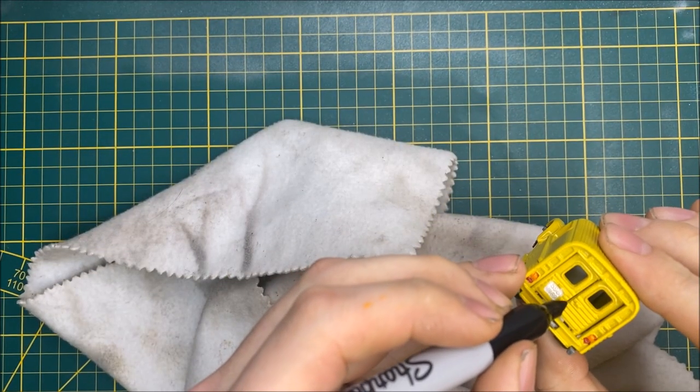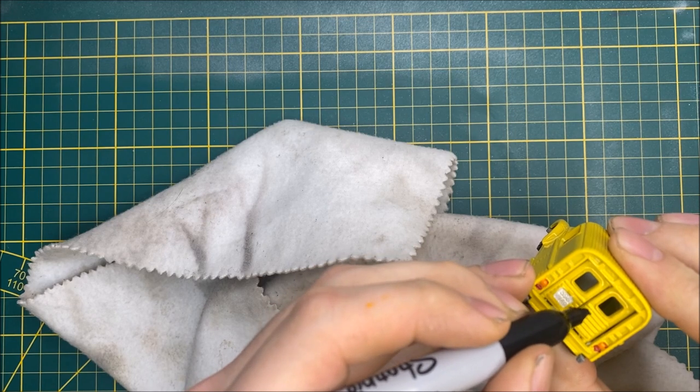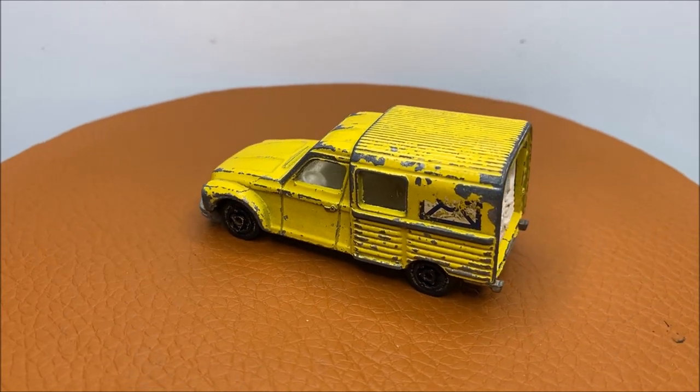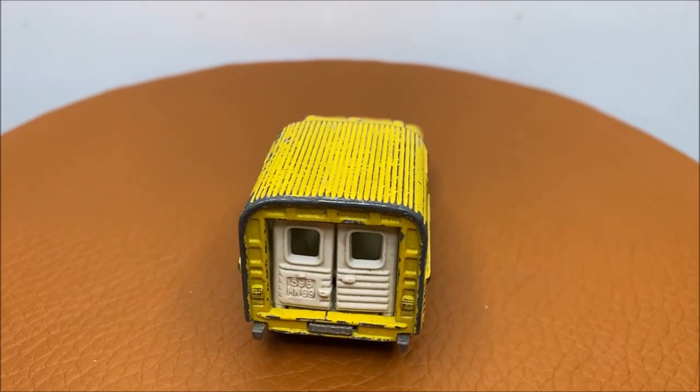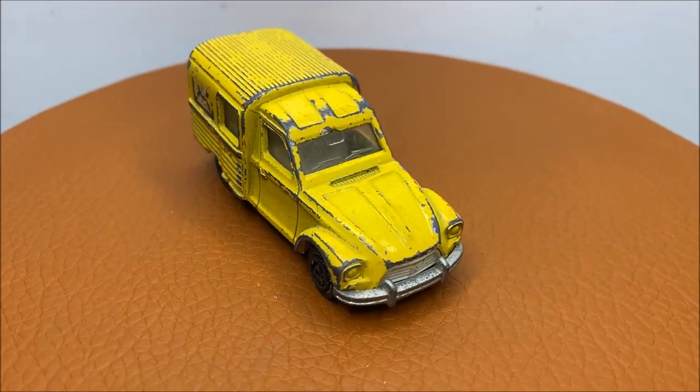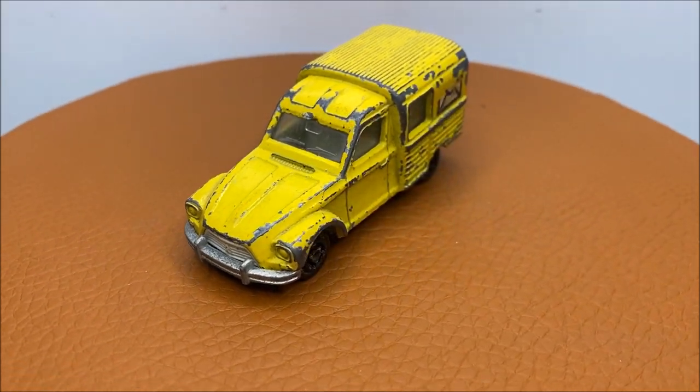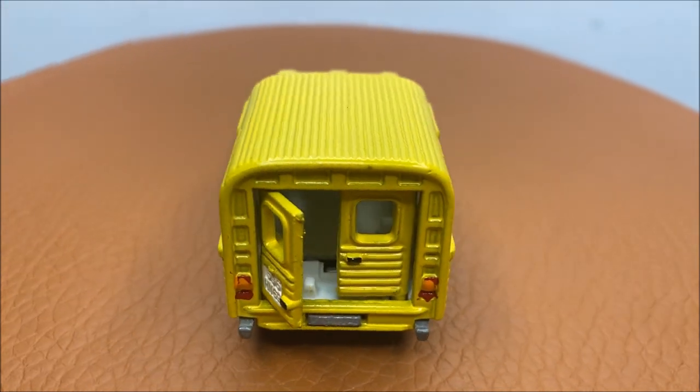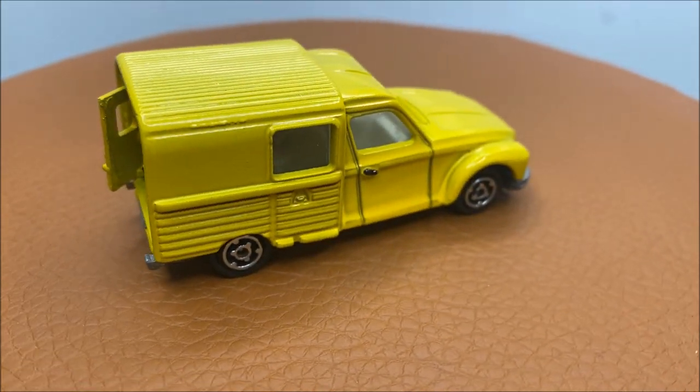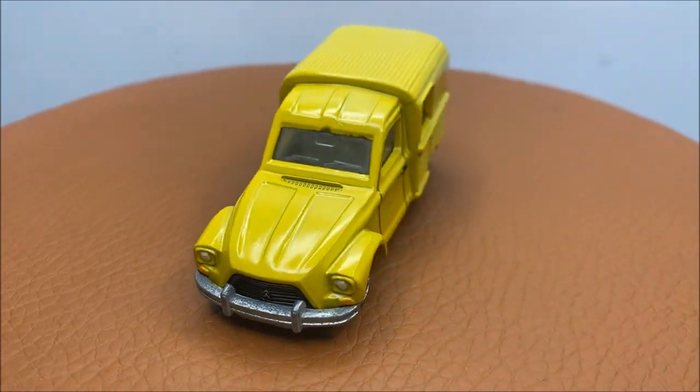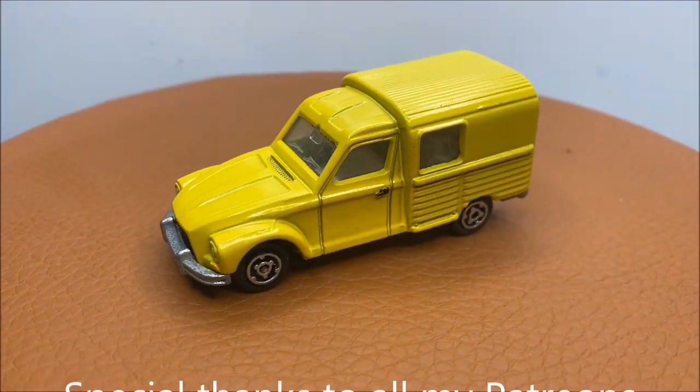This is the car before the restoration. It was a post van, it was yellow with white doors and the paint was just horrible. And this is the car after restoration. If you enjoyed this video please leave a like, subscribe. If you know how to make decals please let me know in the comment section. Don't forget to check out my other videos and a special thanks to every single one of my patrons. Bye.